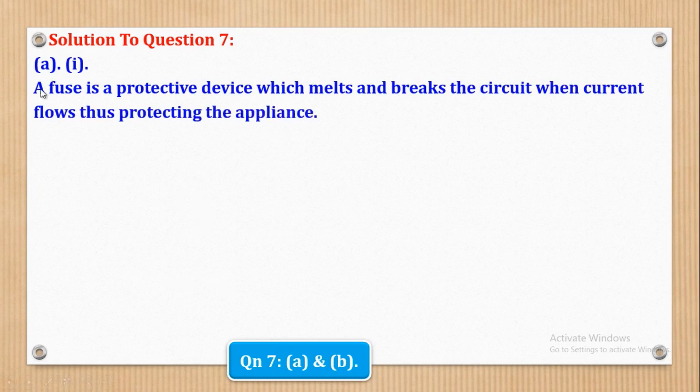Part A says, state the use of the following in wiring a building: Roman 1, a fuse; Roman 2, the switch; and Roman 3, earth connection. So let's first try Part A. Roman 1, we shall see that a fuse is a protective device which melts and breaks the circuit when current flows, thus protecting the appliance.